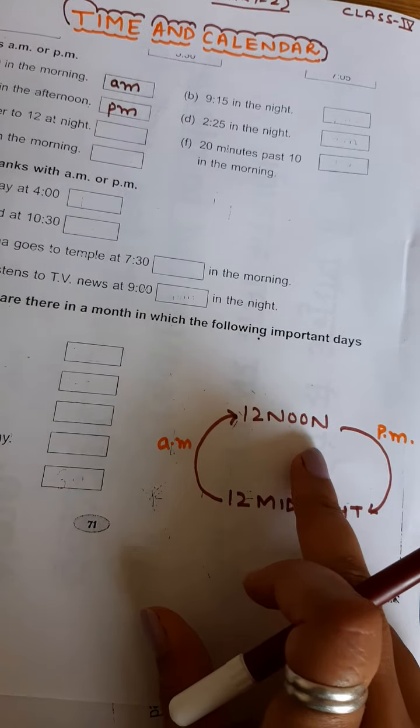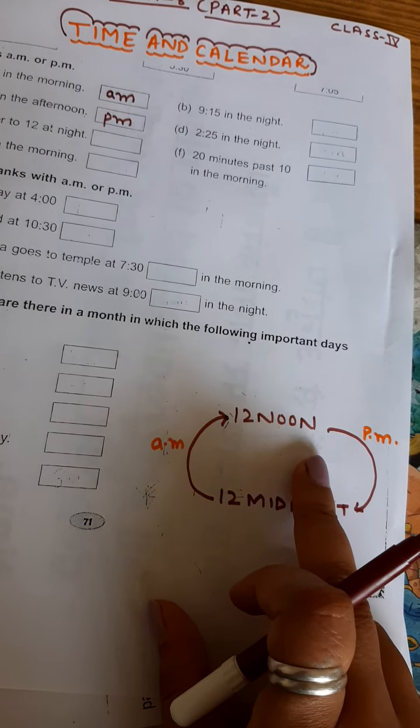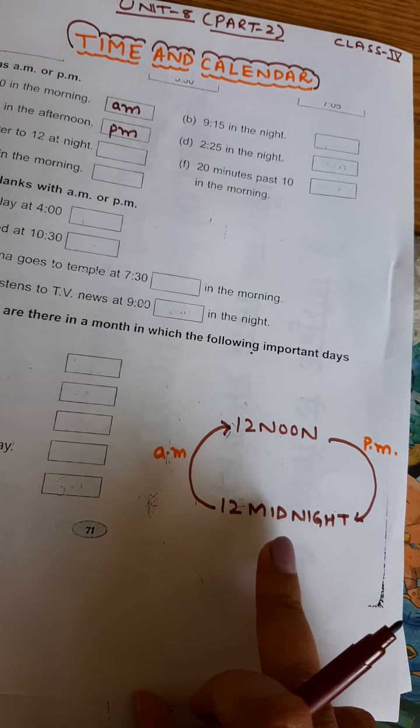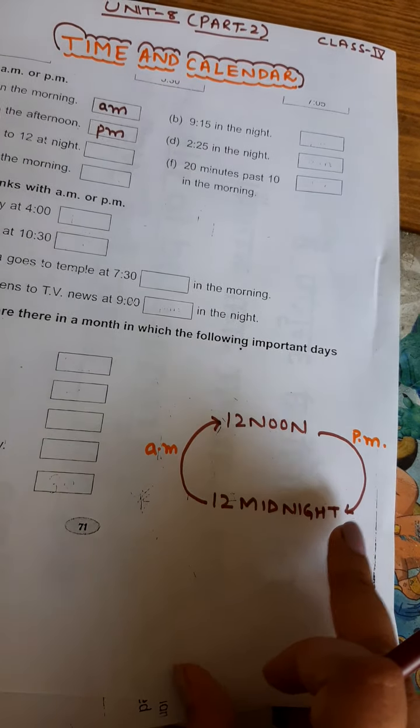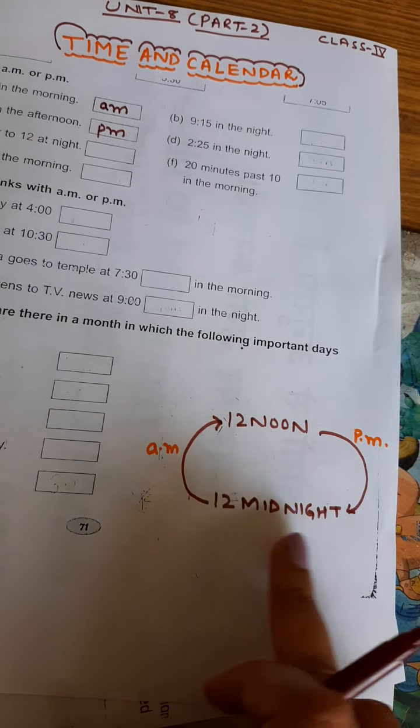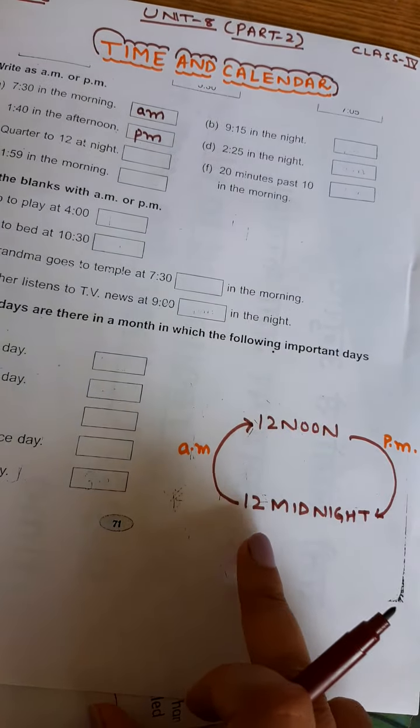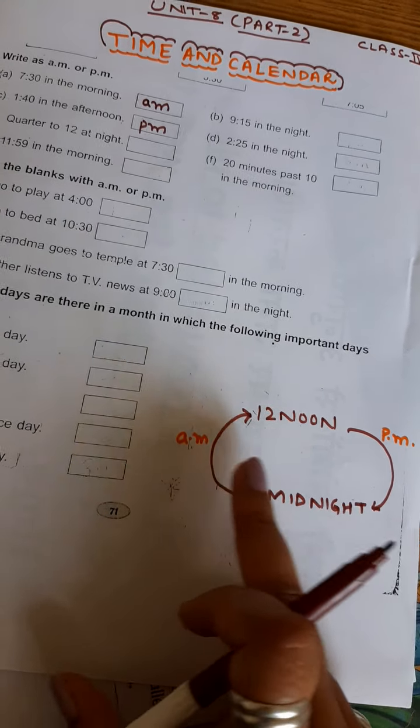We write 12 noon for 12 in the morning and 12 midnight for 12 in the night. The time between 12 noon to 12 midnight is written as PM, and the time between 12 midnight to 12 noon is written as AM.